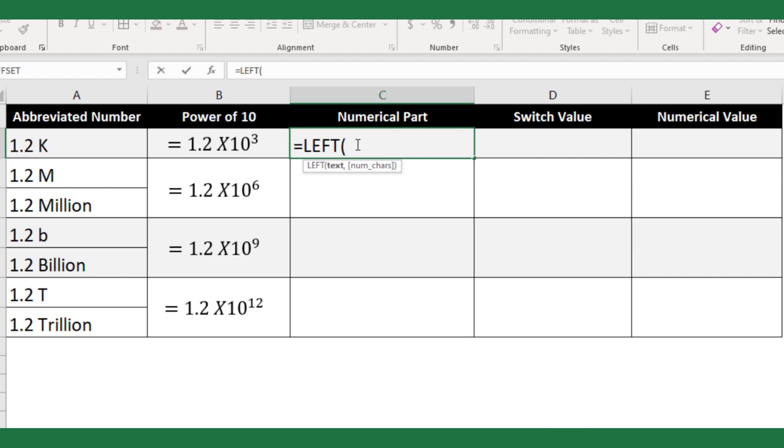The text argument will be cell A2. For the start num chars argument, I will use FIND function. Here, I need to extract the number until I find the first space character. Hence, FIND. Find text argument will be space character.